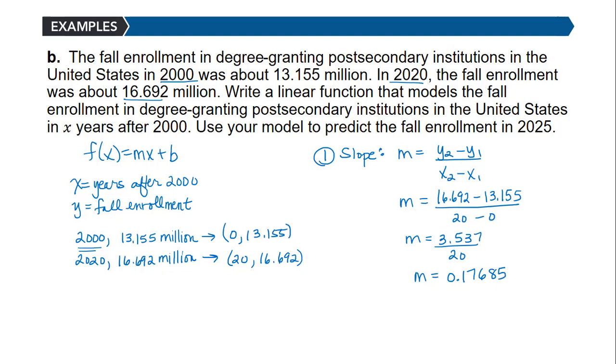Think about what the context of this number means. Our slope tells us that the fall enrollment is increasing by about 0.18 million each year from 2000 to 2020.